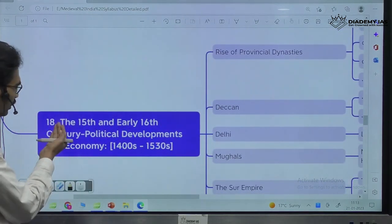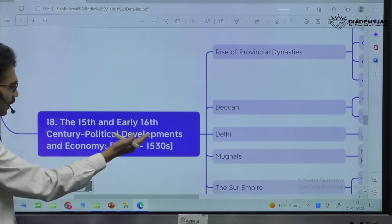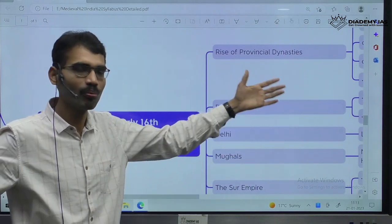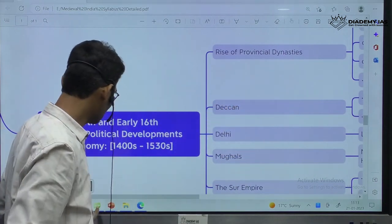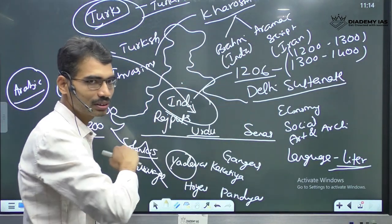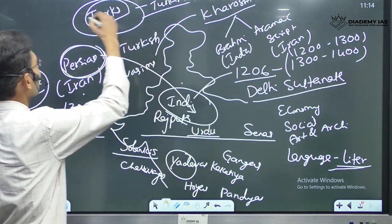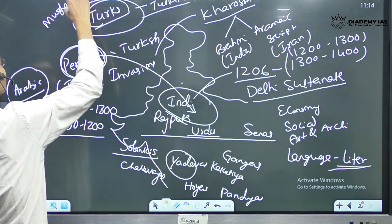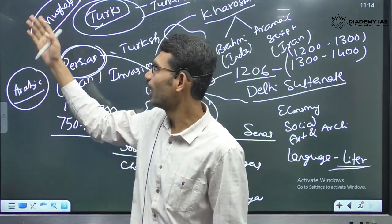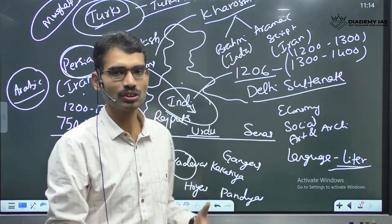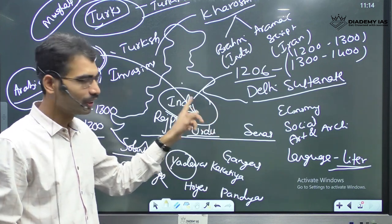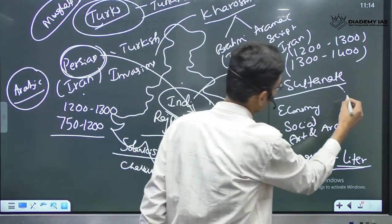Next time period — the 15th and early 16th century, political developments and economy. That means from 1400 to 1530 — before the emergence of Mughals. Turkish people came, Delhi Sultanate emerged. Now by 1500s, Mughals — another branch of Central Asians — entered and became more powerful. Mughals established their authority, and the Delhi Sultanates are going to be replaced by Mughals.